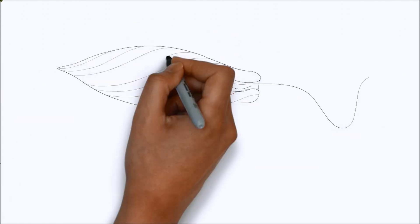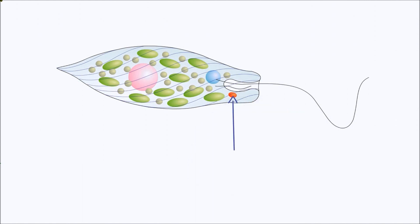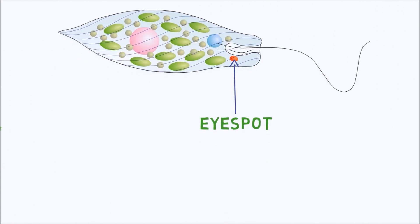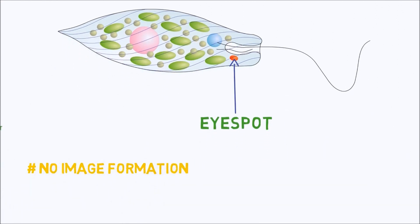Euglena, a single-celled organism, just has a little eye spot at the head end of the cell. That eye spot is sensitive to light. It can't form an image or see anything; all it can detect is whether it's light or dark. So this could be the first step.